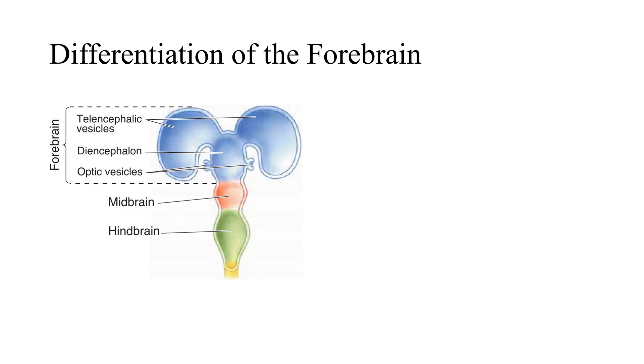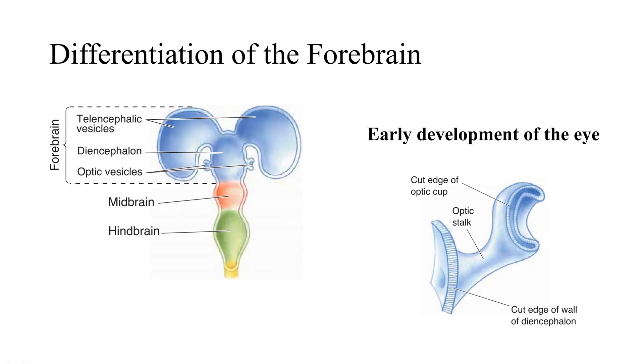Hence, the forebrain at this stage consists of the two optic vesicles, two telencephalic vesicles, and the diencephalon. The optic vesicles grow and invaginate to form the optic stalks and the optic cups which will become the optic nerves and the two retinas in the end. You should bear in mind, the retina at the back of the eye and the optic nerve containing the axons that connect the eye to the diencephalon and midbrain are part of the brain, not the PNS.